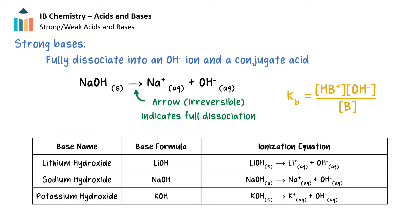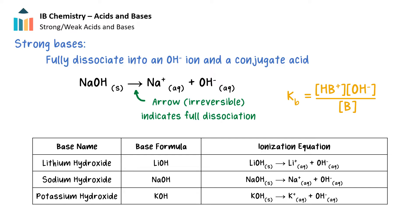Just like strong acids, strong bases are compounds that also fully dissociate into ions, this time a hydroxide ion and a conjugate acid. Some common strong bases are the group 1 hydroxides. They are very soluble if a solution is not saturated, and the hydroxide will completely dissociate in water to produce the hydroxide ion. These equations are also shown with one-way arrows, indicating that the group 1 hydroxides will completely dissociate and all hydroxide will go into solution. Because there is a full extent of dissociation, we get many hydroxide ions in solution and therefore our value for Kb becomes very high.